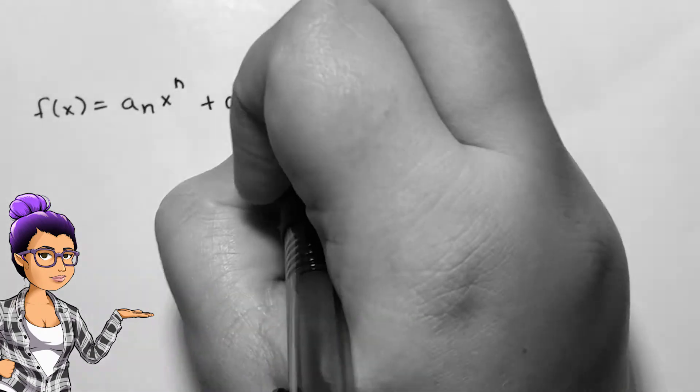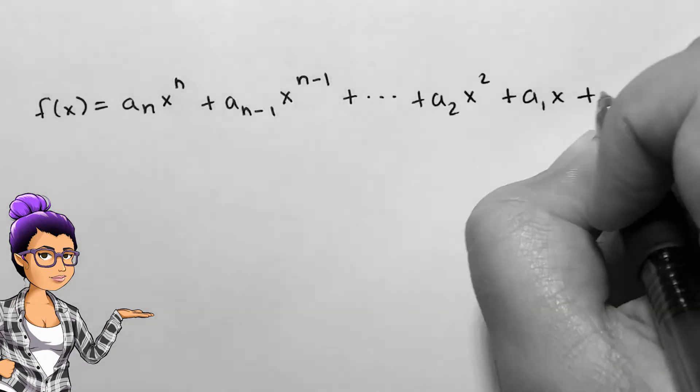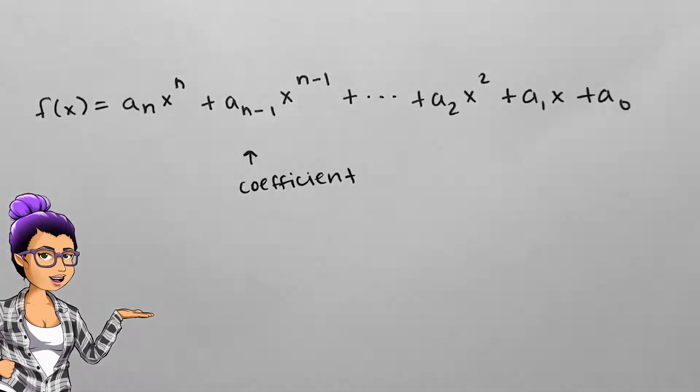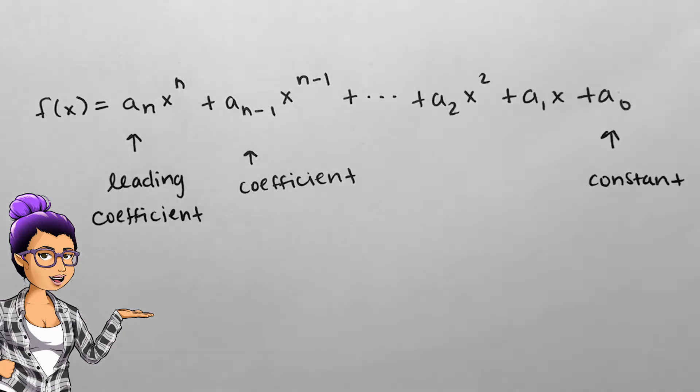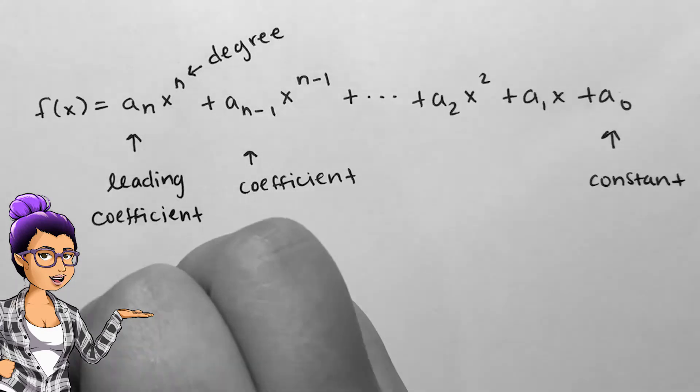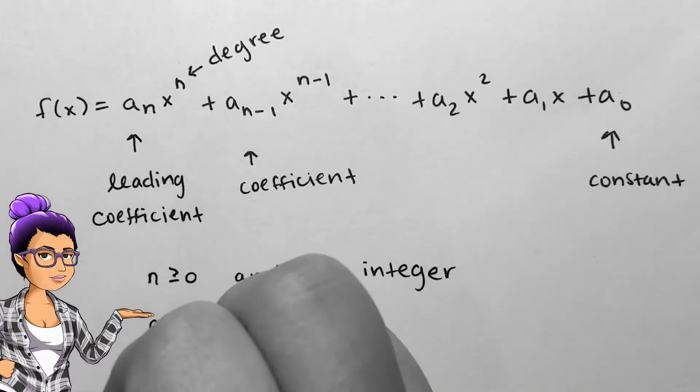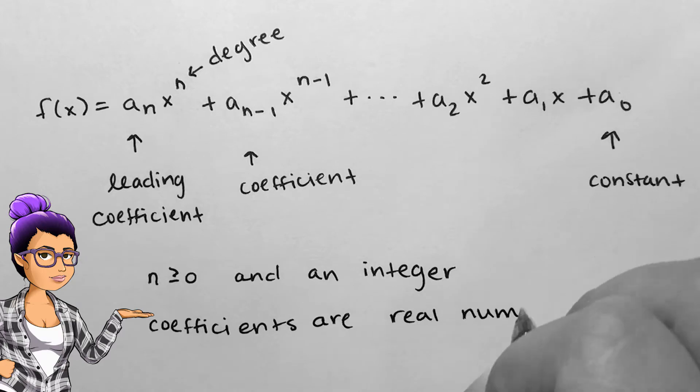A polynomial function looks like this, where each a is a coefficient, a sub n is the leading coefficient, a sub 0 is the constant, and n is the degree. Note that n is a non-negative integer and each a is a real number.